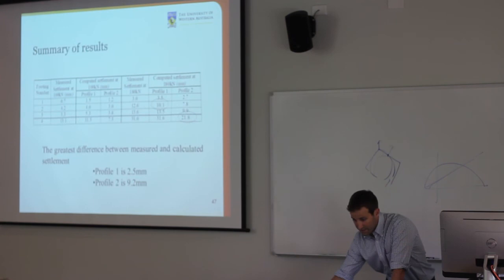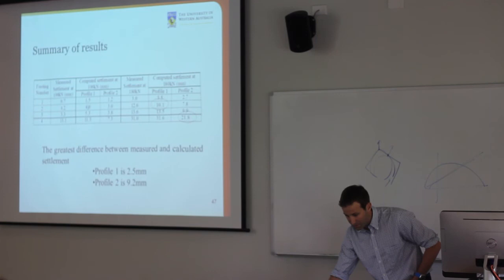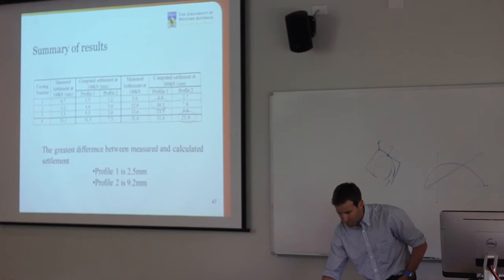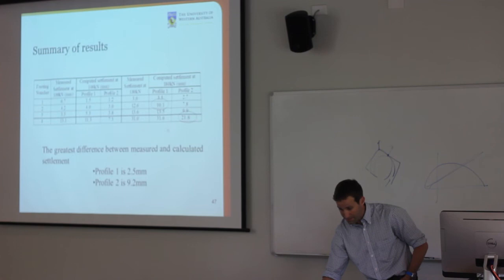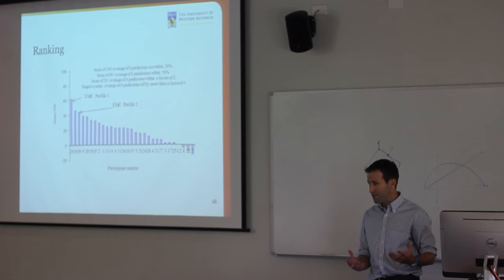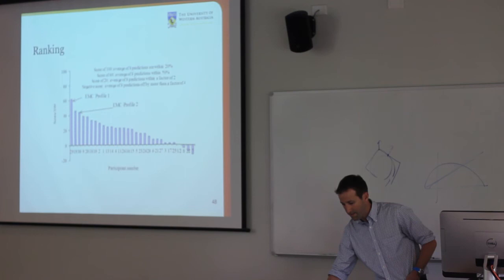A summary of results: footing numbers one to four, measured settlements at 100 kN and at 180 kN, with back-calculated values for elastic profile 1 (bender elements) and elastic profile 2 (in-situ seismic cone). The two biggest differences in magnitude were about 2.5 mm off for profile 1 and about 9 mm off for profile 2 (actual ~32 mm). Overall a reasonably decent match. The EMC model with elastic profile 1 would have won the competition, and with profile 2 would have come second. A negative score represents predictions off by a factor of four or more on average; a score of 20 represents within a factor of two on average.